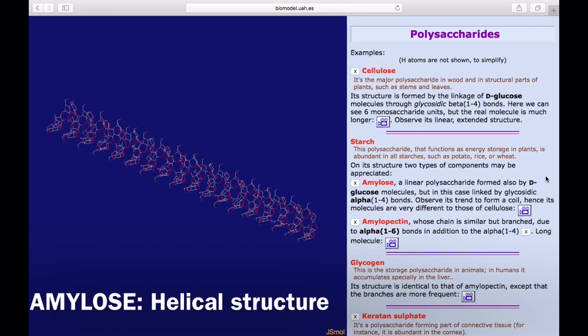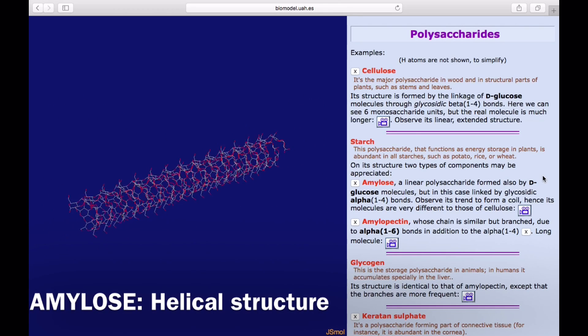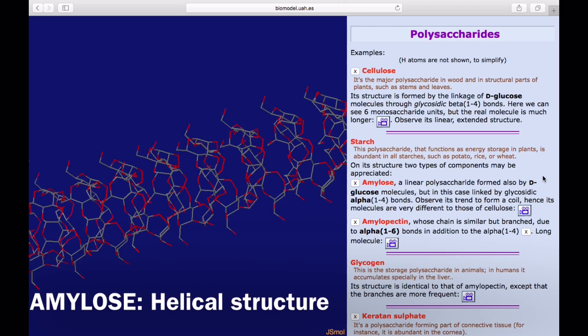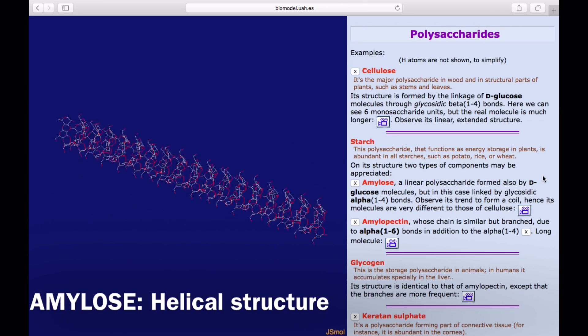If we first click on amylose, we can see that this linear polysaccharide has a tendency to form a coil and produce a helical structure.